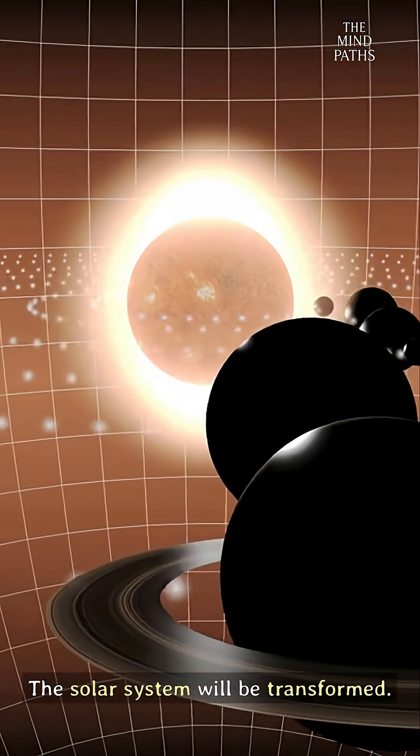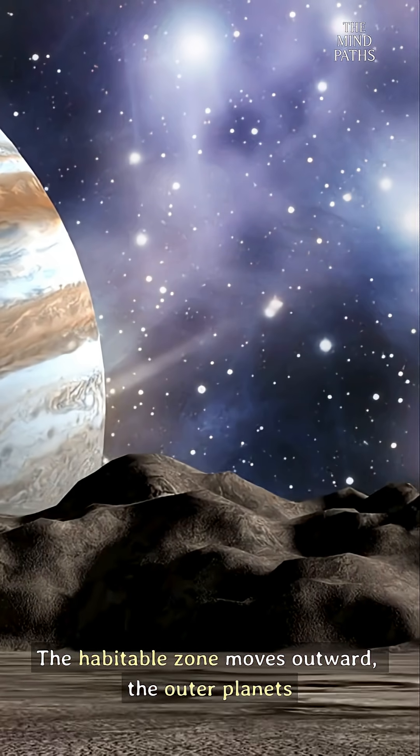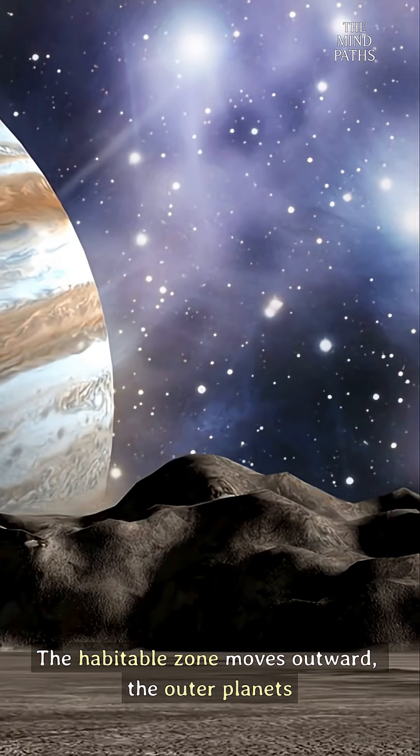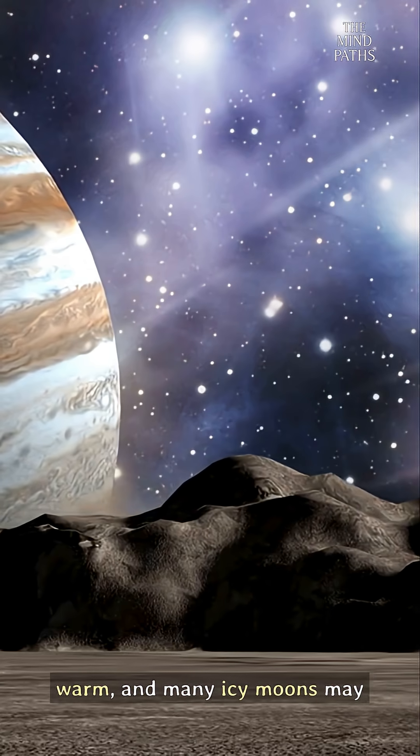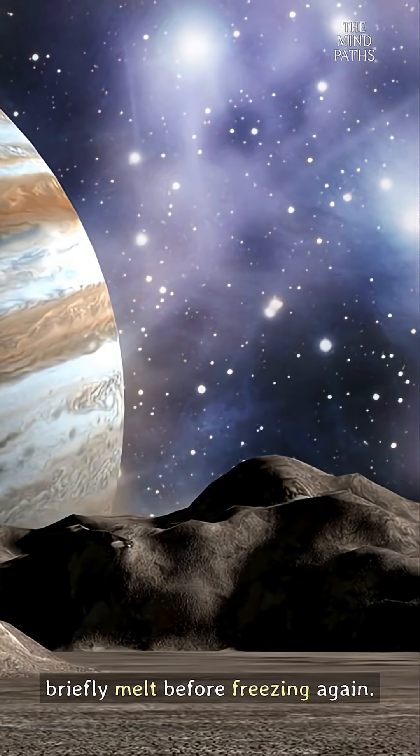The solar system will be transformed. The habitable zone moves outward, the outer planets warm, and many icy moons may briefly melt before freezing again.